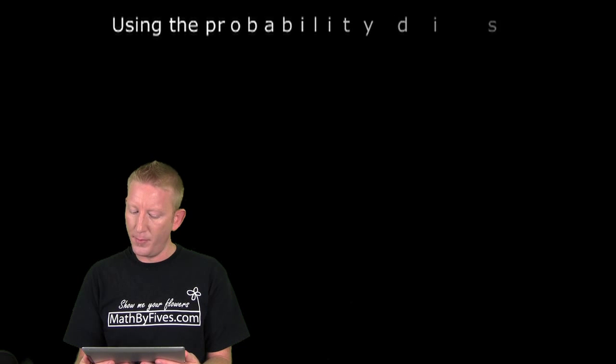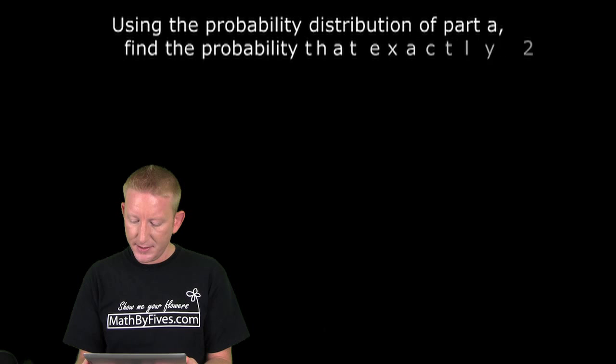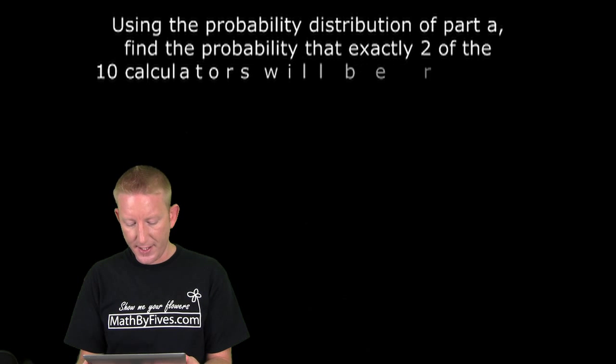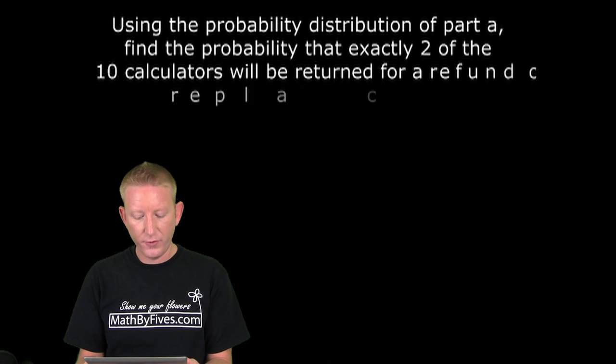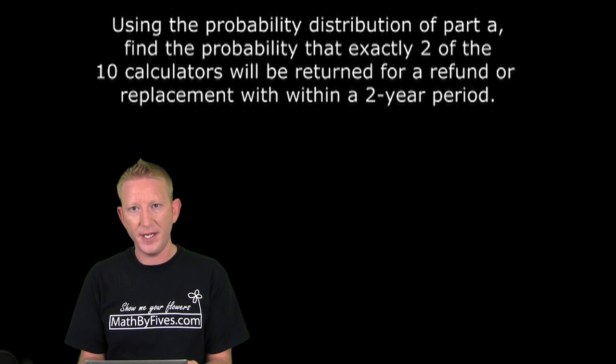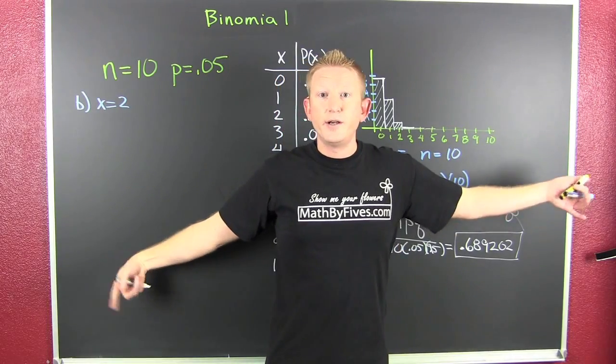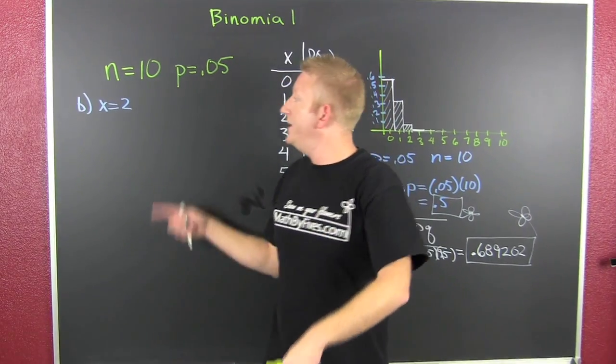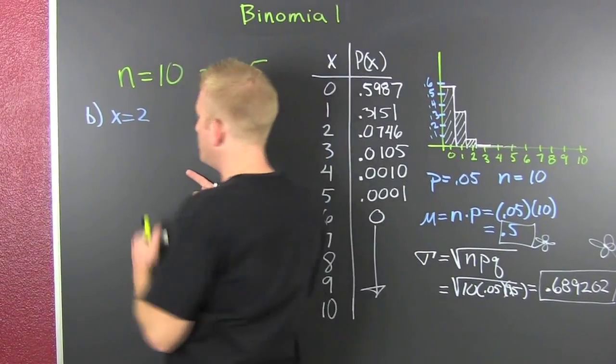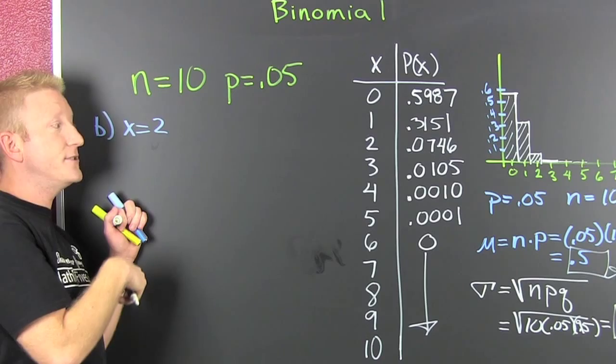Part B. Using the probability distribution from Part A, find the probability that exactly 2 of 10 calculators will be returned for refund or replacement within a 2 year period. Period. You ready for Part 2? I mean B. Here, they want us to find the probability that we get exactly 2 using that distribution.